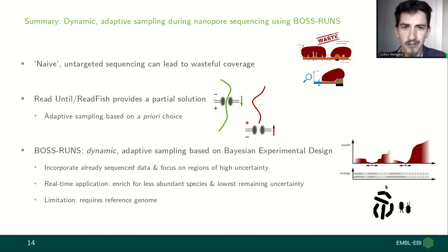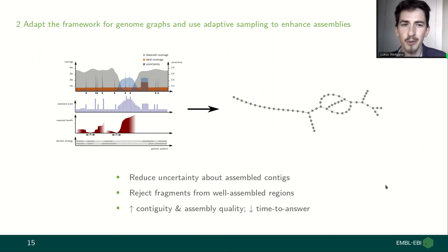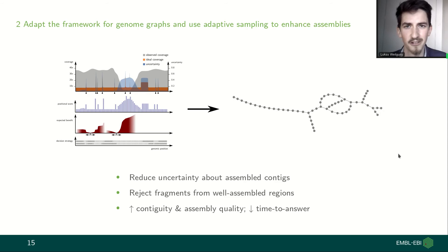However, there is one limitation: we need a reference genome in order to do all of these computations. This leads me to the second part, where we adapt this same framework — but instead of using it on a linear reference genome, we try to use it on a genome graph. The goal is to reduce the uncertainty we have about assembled contigs.